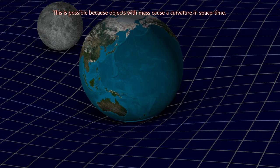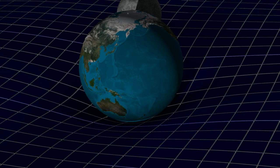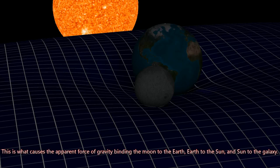This is possible because objects with mass cause a curvature in space-time. This is what causes the apparent force of gravity binding the Moon to the Earth, Earth to the Sun, and Sun to the Galaxy.